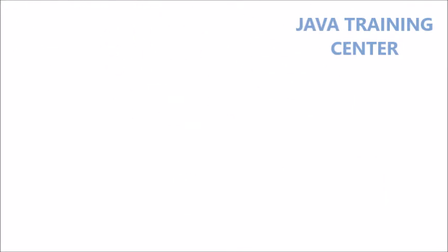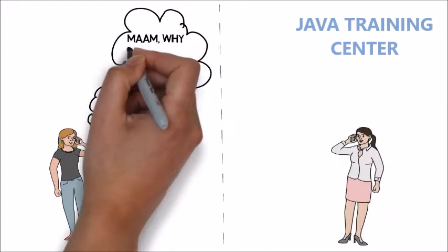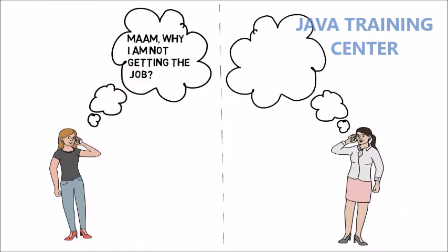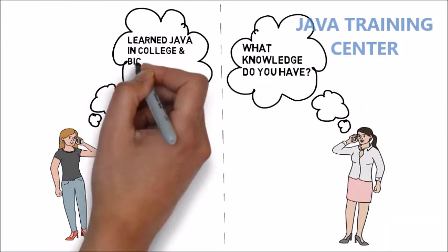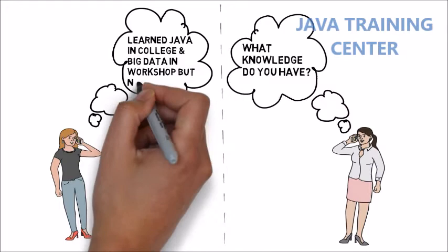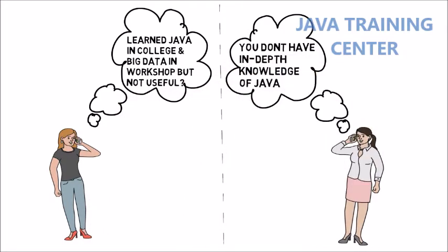At last she contacted her seniors who were already working for big organizations. "Ma'am, why am I not getting the job?" "Tell me first what knowledge do you have?" "I have learned Java in college and big data in one workshop but still not getting opportunities." "I understood your case, this is because you don't have in-depth knowledge of Java."